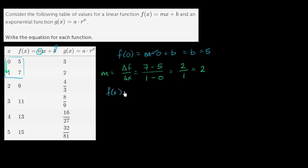Now we know the equation for f(x). f(x) is going to be equal to 2x plus 5. So we figured out what f(x) is. Now we need to figure out what g(x) is. g(x) is an exponential function, and there's really two things we need to figure out: what a is and what r is.